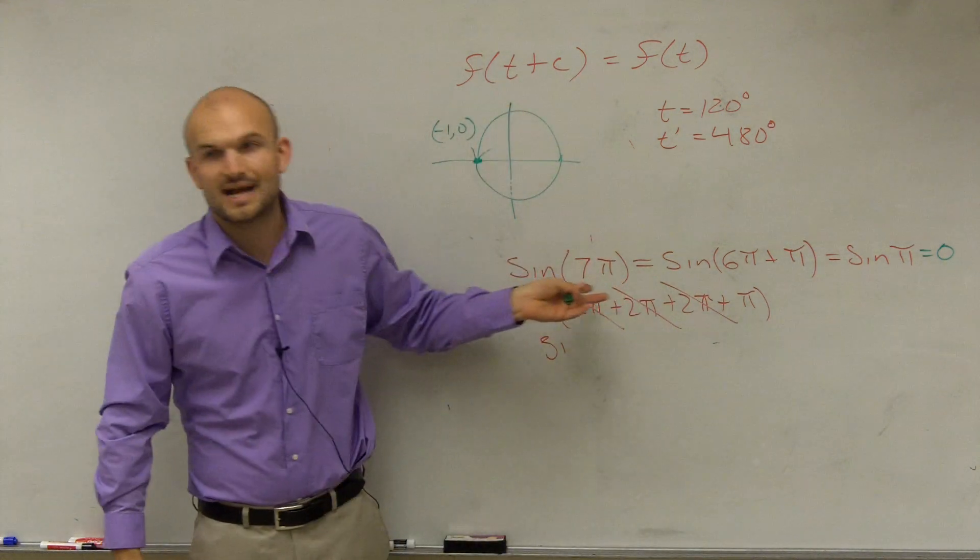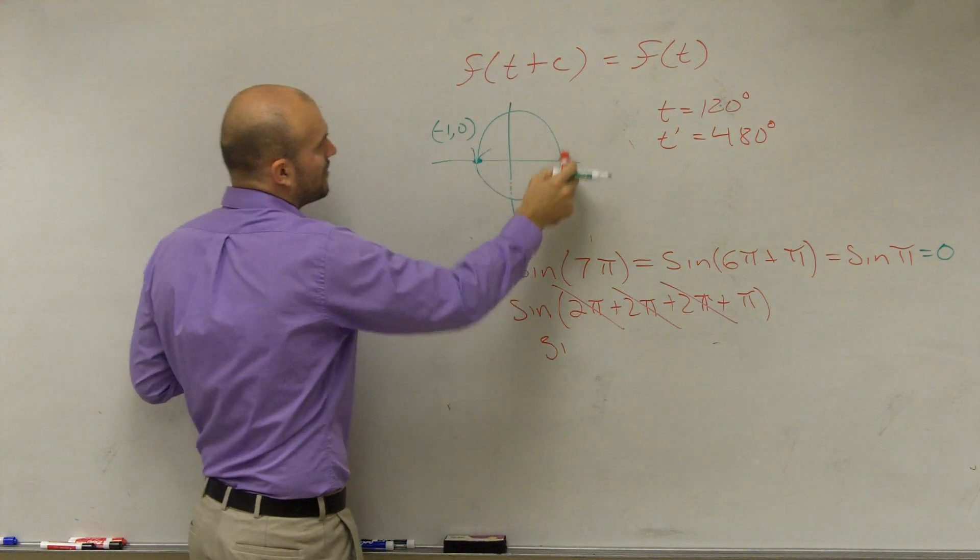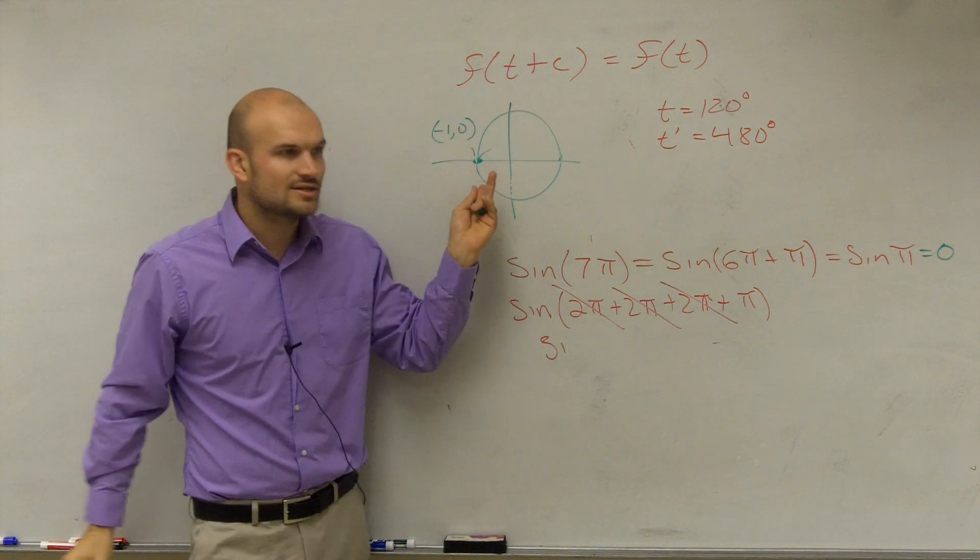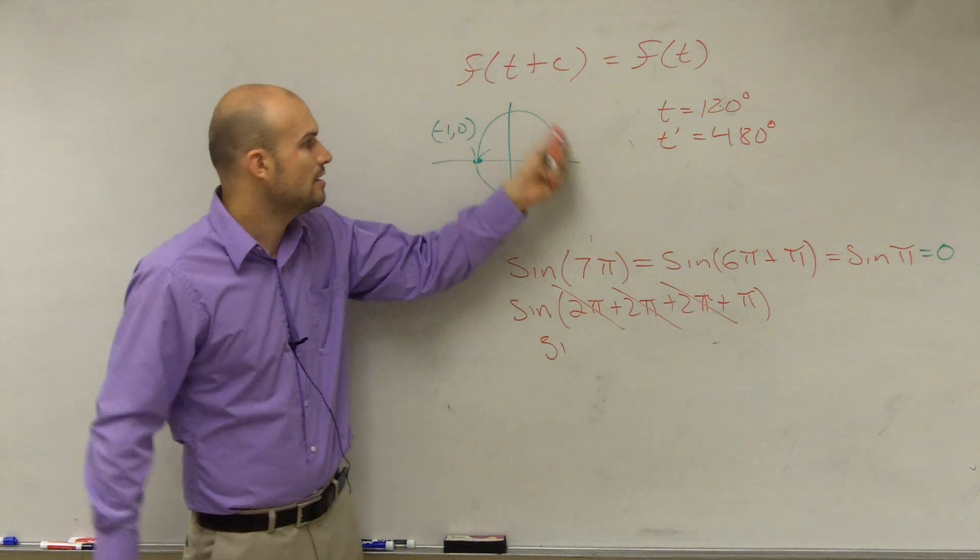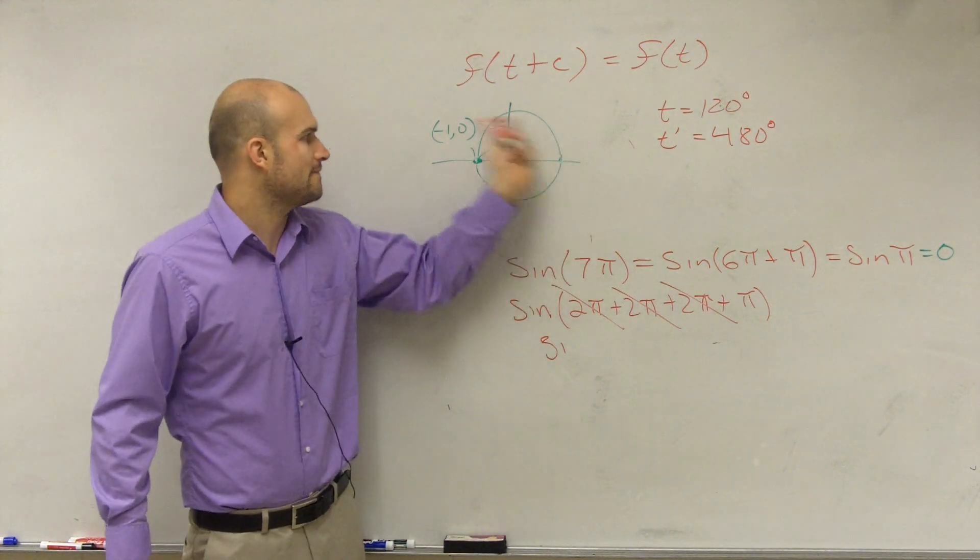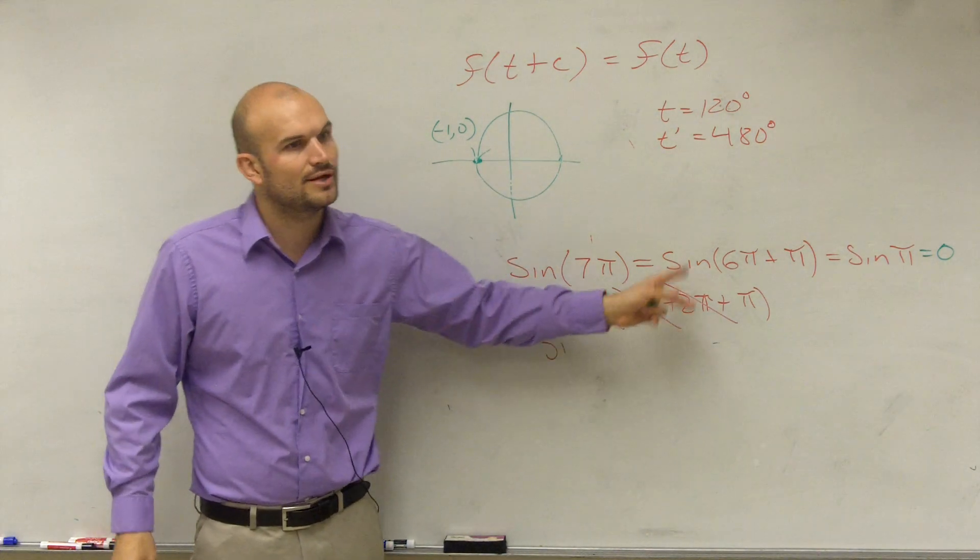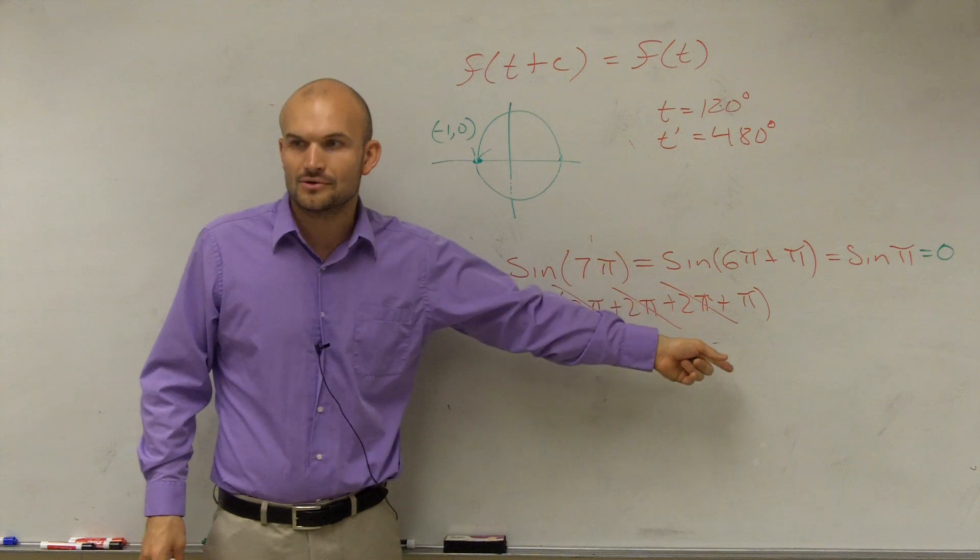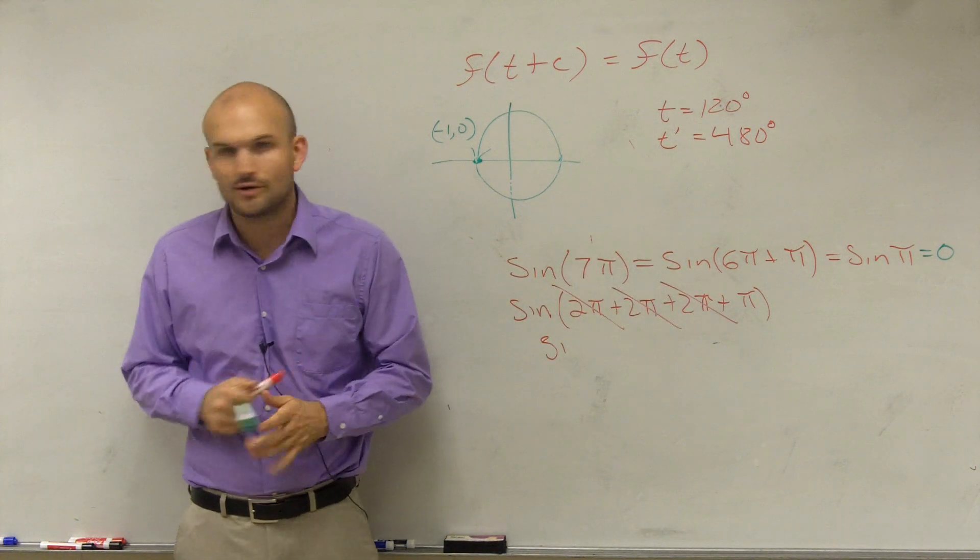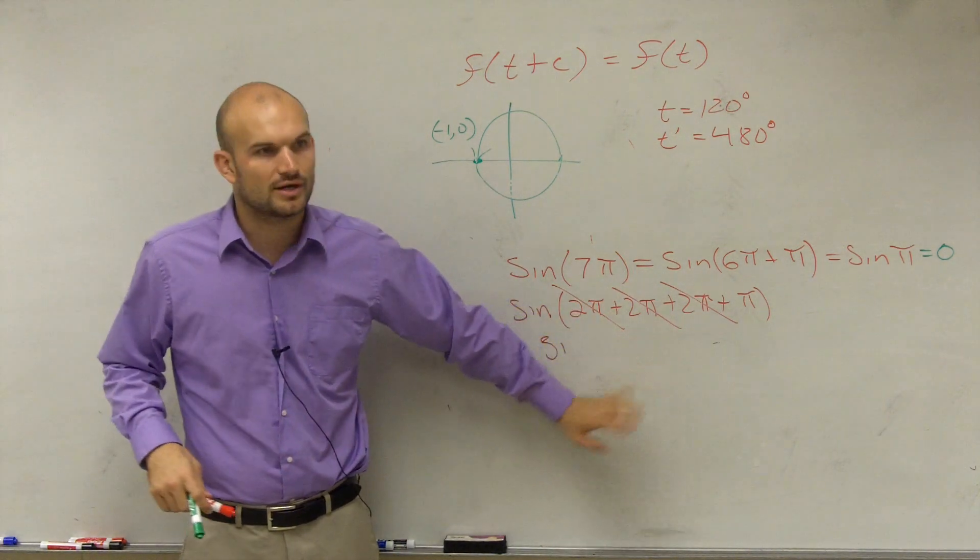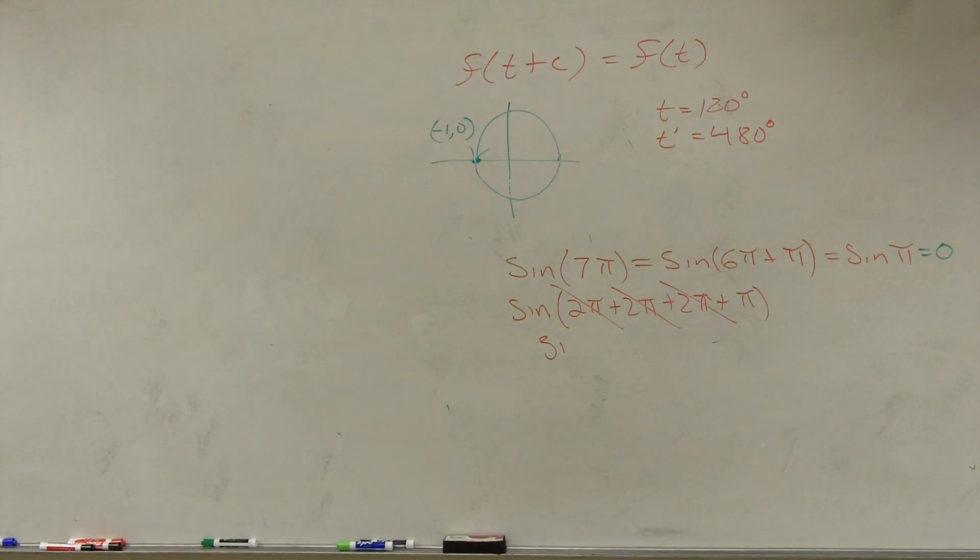So if I asked you to find sine of 7π, rather than doing 1π, 2π, 3π, 4π, 5π, 6π, 7π, you can take out these periods because it's periodic and just evaluate sine of π. It's not a brand new type of problem, but it's a shortcut for you to think about these problems. Let's take a look at another one, a negative one.